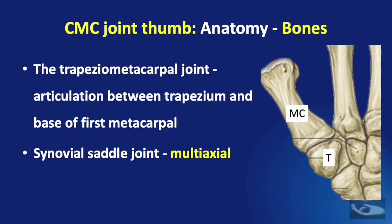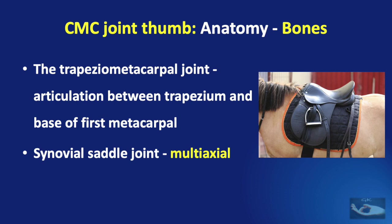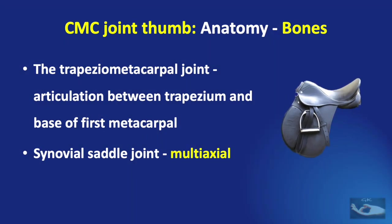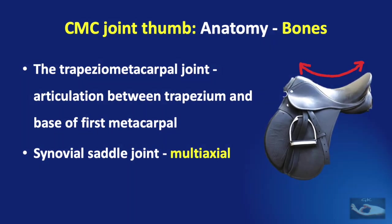Let us understand what this saddle joint is. The saddle is the structure placed on the back of a horse on which the rider sits. The unique feature of the saddle is that it is concave in the longitudinal axis and convex in the transverse axis.